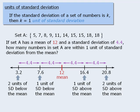The question asks us to determine which numbers in the set are within 1 unit of standard deviation from the mean. So we are looking for numbers in this range, from 1 unit of standard deviation below the mean to 1 unit of standard deviation above the mean. In other words, we need to determine how many numbers in this set are between 7.6 and 16.4. As we can see here, there are 6 numbers between 7.6 and 16.4.